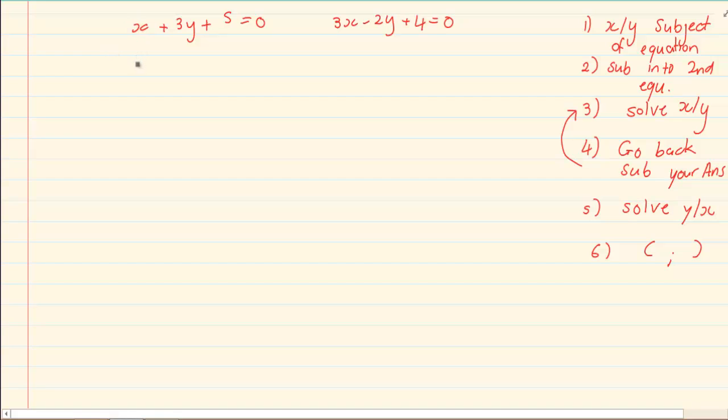Okay, I want to get the x alone. So I am going to have x is equal to, I am going to move over the 3y so it becomes minus 3y. I am going to move over the 5 so it becomes minus 5. So what I have done was, I have made x or y the subject of the equation. So x is alone.